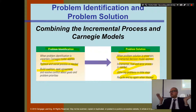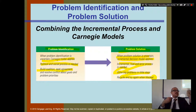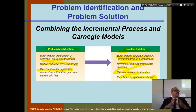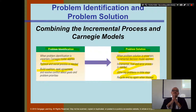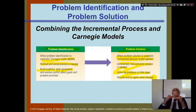For example, if you fail an exam, use the Carnegie model: form a group with others who struggled, talk together, and identify the best solution acceptable to all. Then use the incremental step-by-step approach to solve the problem: study harder, talk to the instructor, petition the exam, or request a curve — taking small steps one by one.